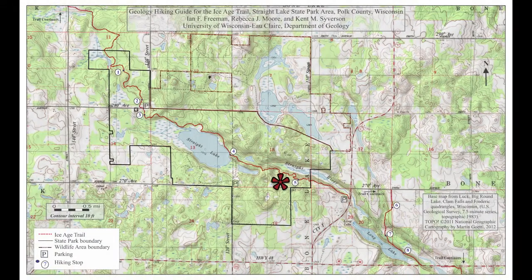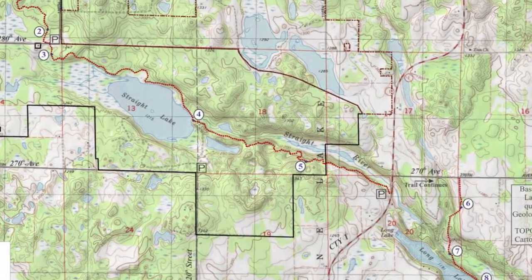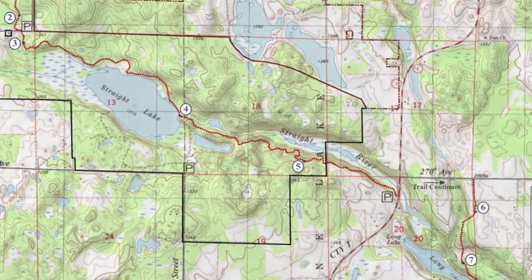Hummocky topography is the most common terrain in the park and surrounding areas. The best example is seen along the trail between Straight Lake and County Highway I.